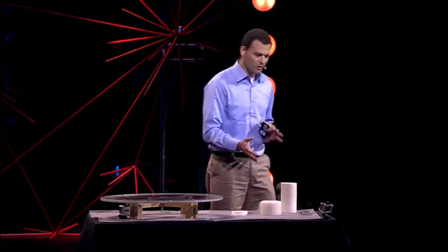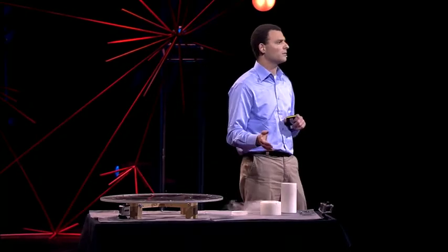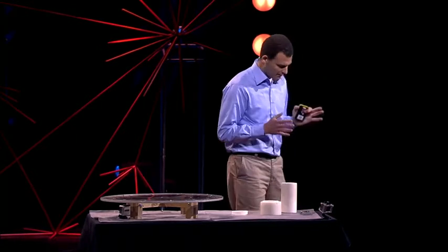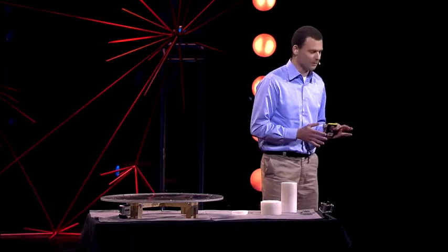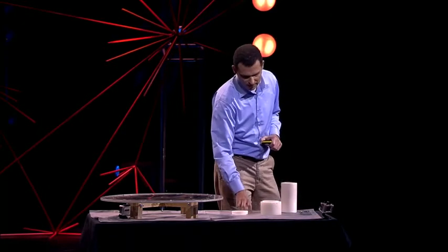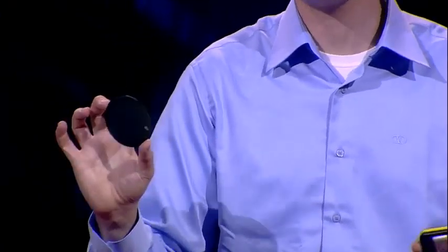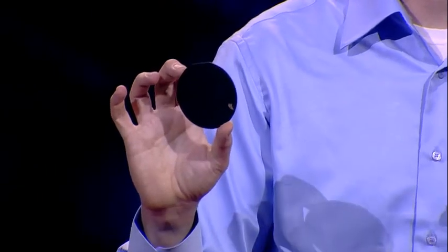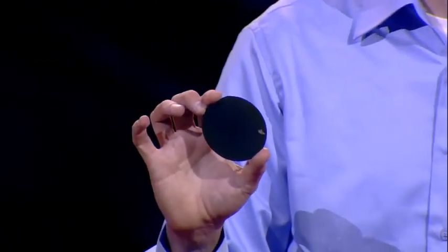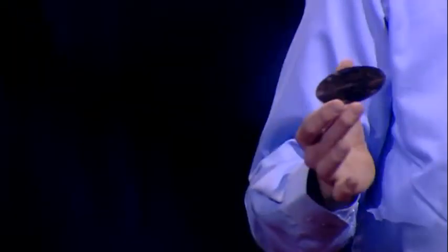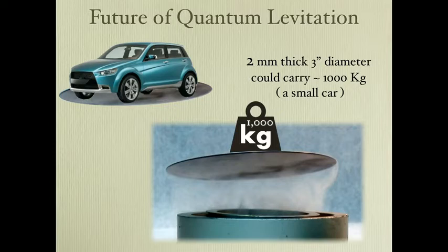What is the future of quantum levitation and quantum locking? Imagine you had a disk similar to the one I have here — three-inch diameter — with a single difference: the superconducting layer, instead of being half a micron thin, being two millimeters thin. This two-millimeter-thin superconducting layer could hold 1,000 kilograms — a small car — in your hand. Amazing.